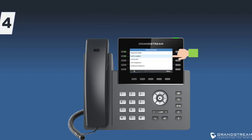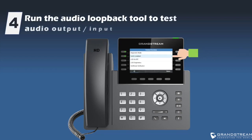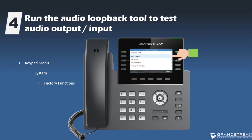The GRP and GXP IP phones have a built-in audio loopback tool that you can run to test audio output and input. This tool is available via the keypad menu under System > Factory Functions > Audio Loopback. This tool will help determine if the handset or speaker on the phone is defective. If the audio loopback confirms the handset and speaker are functional, it is possible the audio communication issue is related to SIP NAT.